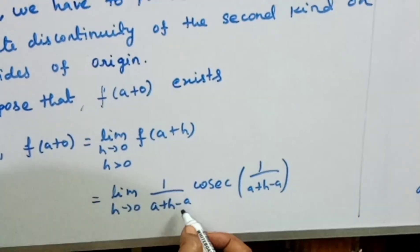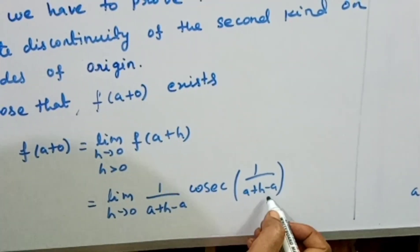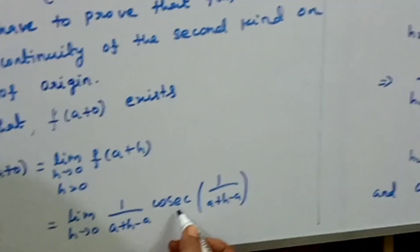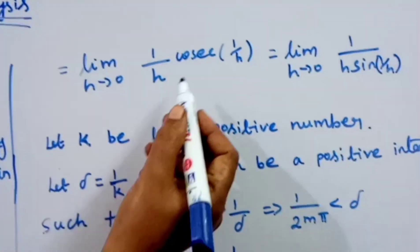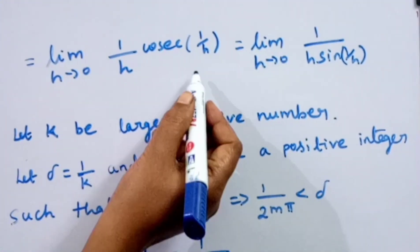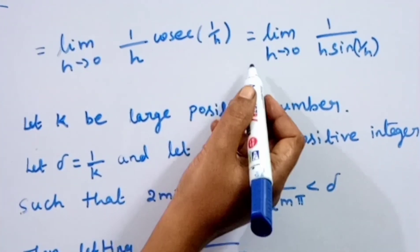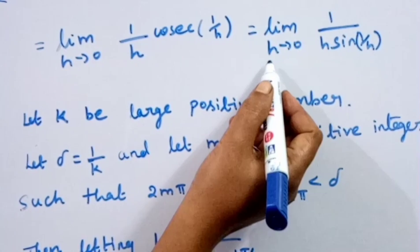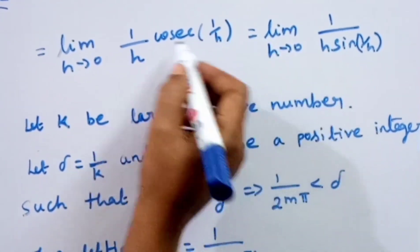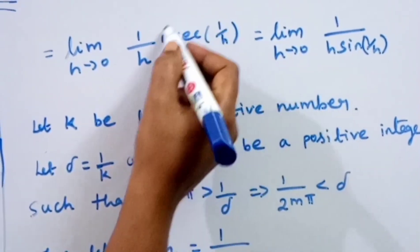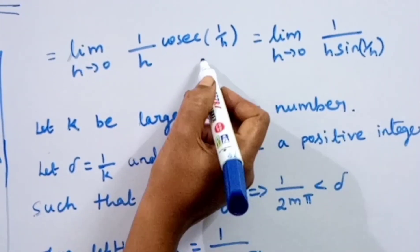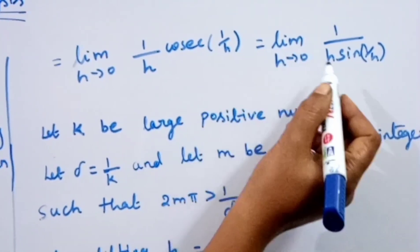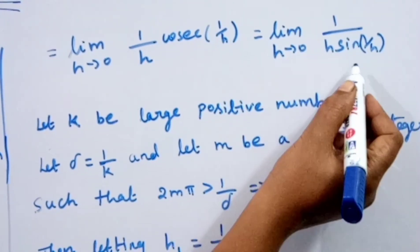We calculate f(a+h). Substituting (a+h) into the function, the 'a' terms cancel, giving limit as h tends to 0 of (1/h)·cosecant(1/h). Since cosecant is the reciprocal of sine, this becomes limit as h tends to 0 of 1/(h·sin(1/h)).